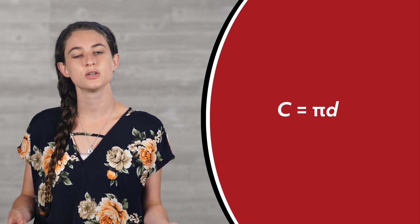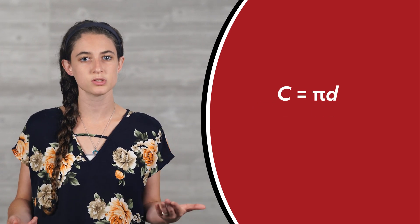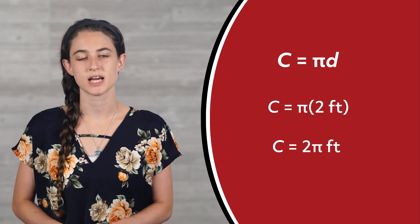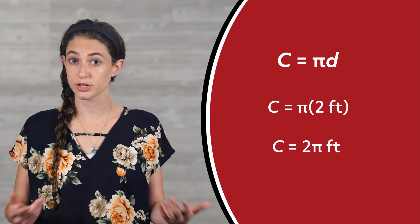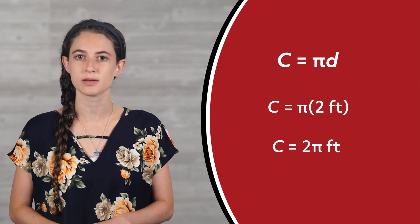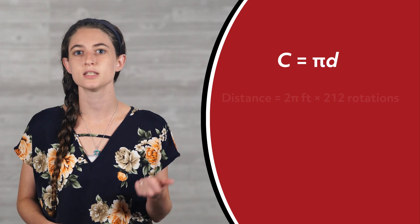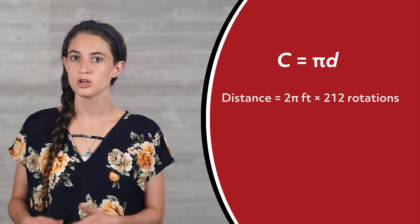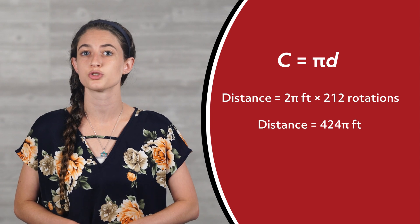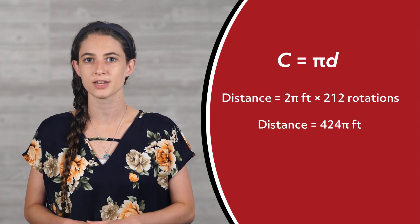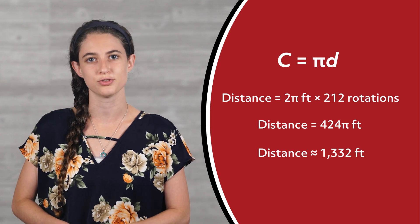Let's use the diameter version of the circumference formula this time instead of the radius version. Circumference is equal to π times diameter, so it's equal to π times 2 feet, or 2π feet. This is how far the bike travels each time the tire does one rotation. To find our distance, we simply need to multiply this by the number of times the tire fully rotated, which is 212. So our distance is equal to 2π feet times 212 rotations, which gives us a distance of 424π feet. Or, if we multiply by pi on our calculator, we'll get approximately 1,332 feet.